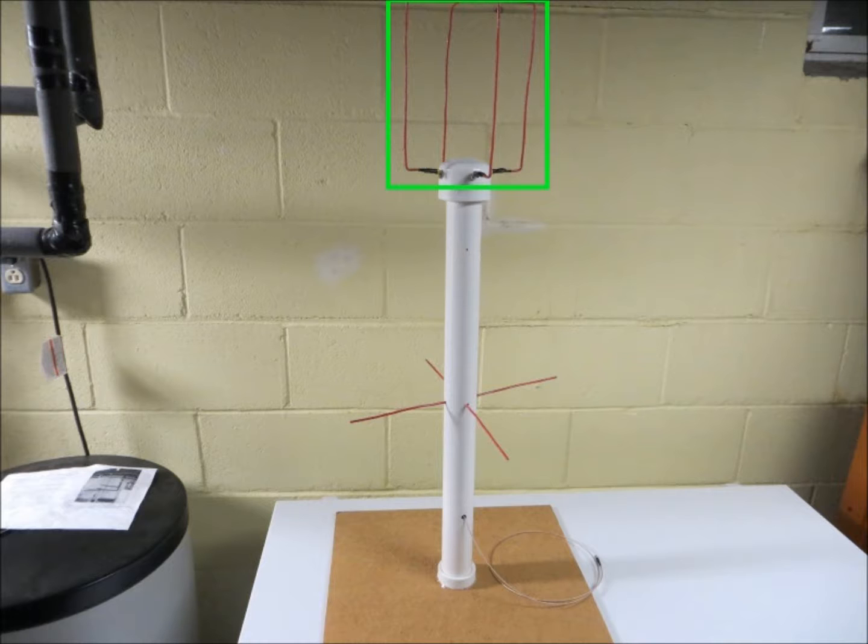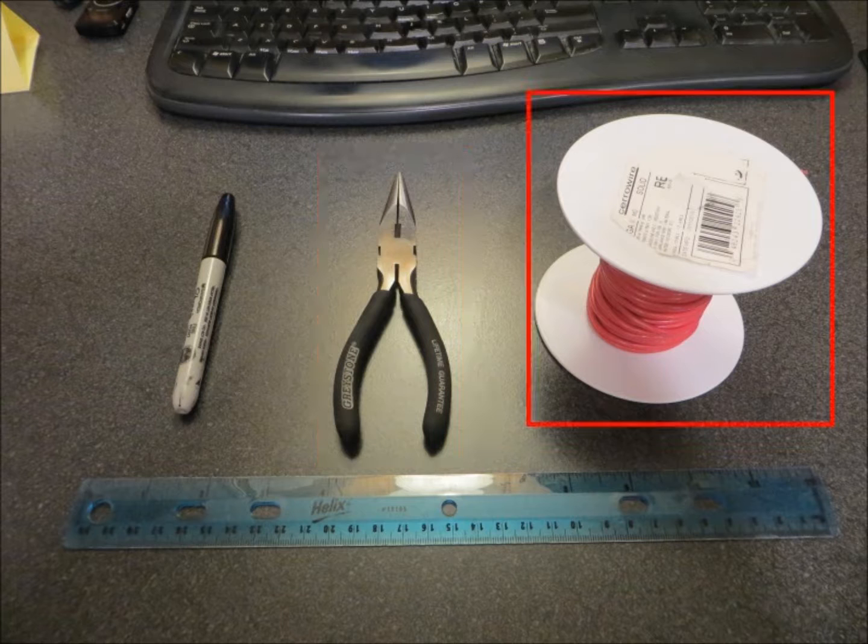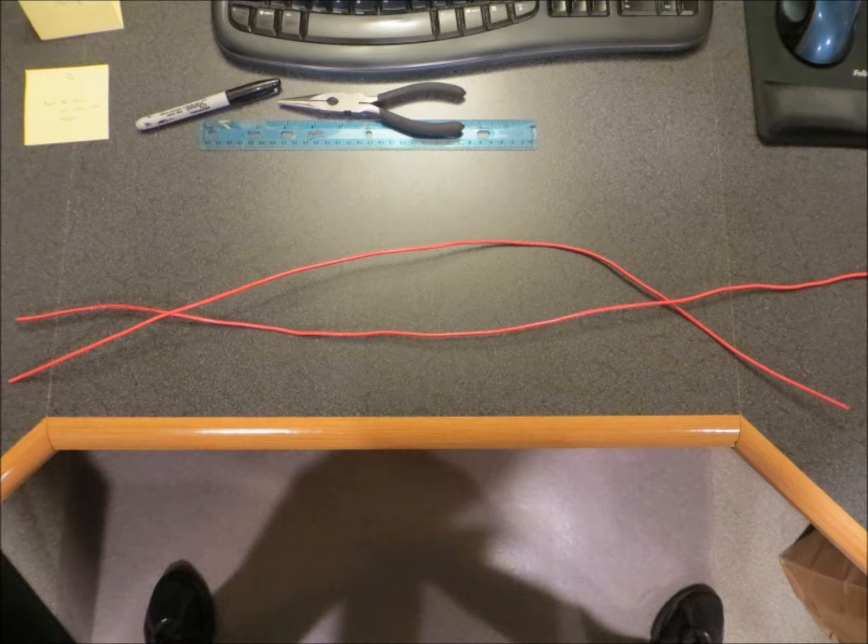Our first task was to build the driven elements, which are the two rectangular loops on top. For that, we needed a ruler, a Sharpie marker, our needle nose pliers, and our 12-gauge solid copper wire. The driven elements would end up being rectangles that were 17 centimeters wide by 21 centimeters tall. So Dad started by cutting two lengths of wire that were each a little more than 76 centimeters long, and then straightening them out with the vise.